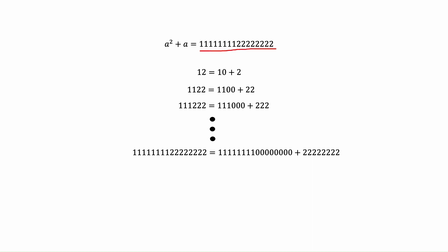Let's simplify this number. For making it more understandable, we can write an example for a smaller number — for example, 12. It contains only one one and one two, and we can write it down as ten plus two. The next number contains two ones and two twos, and we can write it down as eleven hundred plus twenty-two.